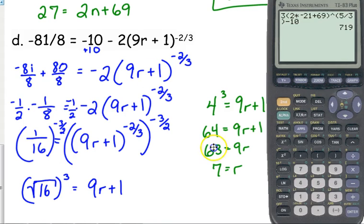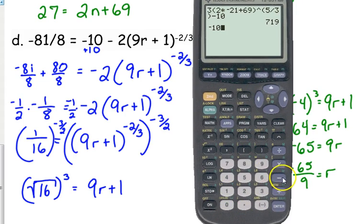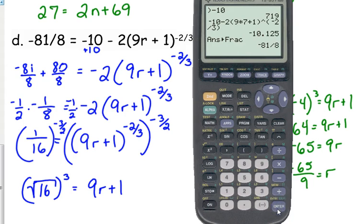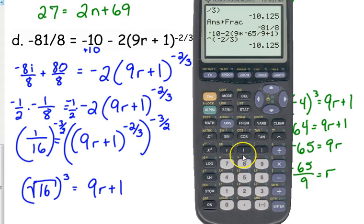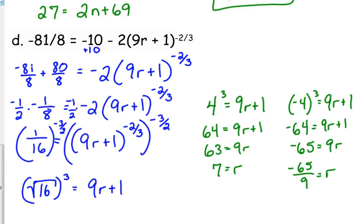Can't hurt to check them. Negative 10 minus 2 times 9 times 7 plus 1 raised to the negative 2 over 3, and let's make sure, that's negative 81 over 8. And let's check negative 65 over 9 because that one looks really weird, but it works too. So not on the quiz Friday, but not that difficult. Problems like this, yes.